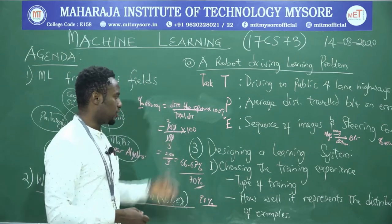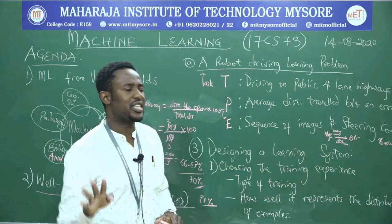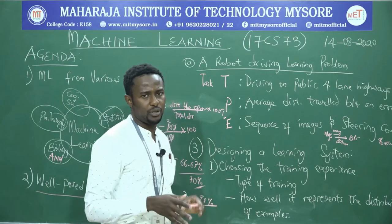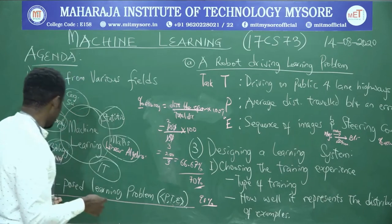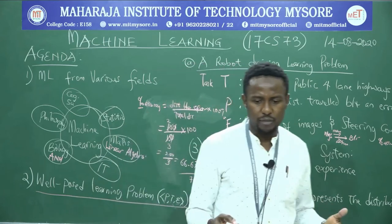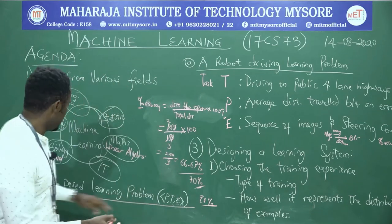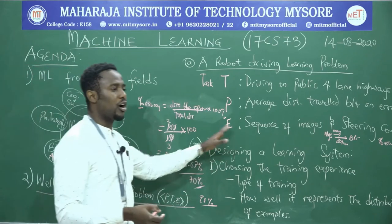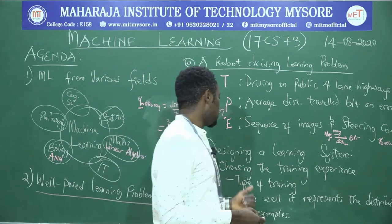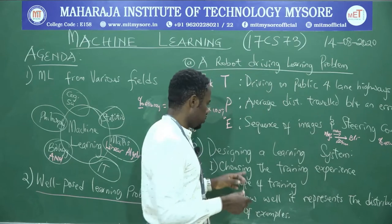That leads us to another important concept: designing a learning system. There are about five steps involved. First is choosing the training experience. A learning system is any system that can learn explicitly without being programmed — pointing back to Tom Mitchell's definition of a well-posed learning problem.